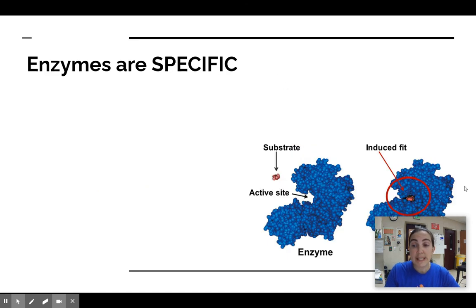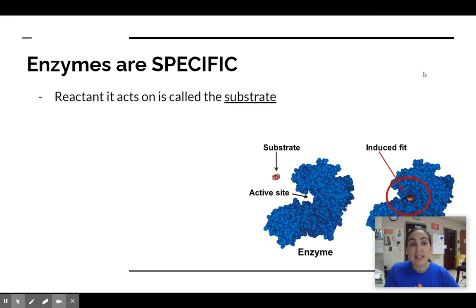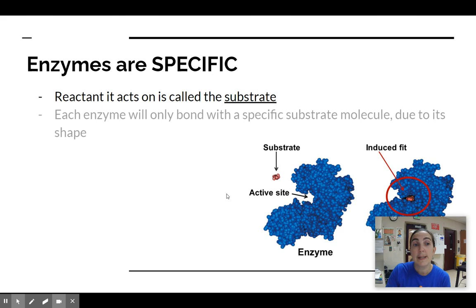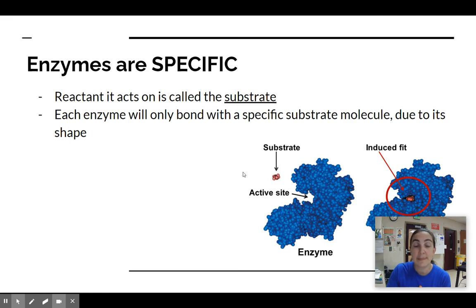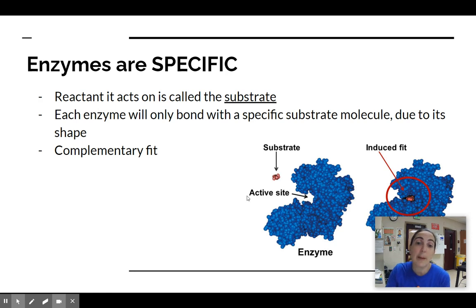Each enzyme is specific to the reaction that it catalyzes. The reactant — the molecule that it acts on — is called the substrate. The substrate is basically the reactant in the chemical reaction; in this diagram the pink molecule is the substrate. Each enzyme can only bond with its specific substrate, and that has to do with its shape and the chemistry of the R groups of the amino acids right in the active site. This is also referred to as a complementary fit — the shape of these two molecules complements each other so they can fit together like a key and a lock or like puzzle pieces.